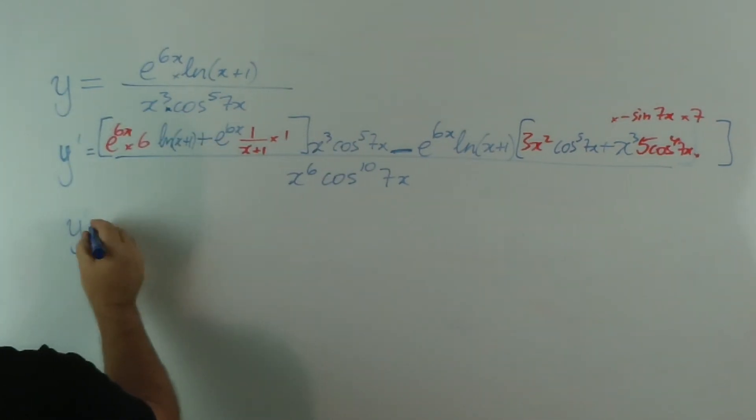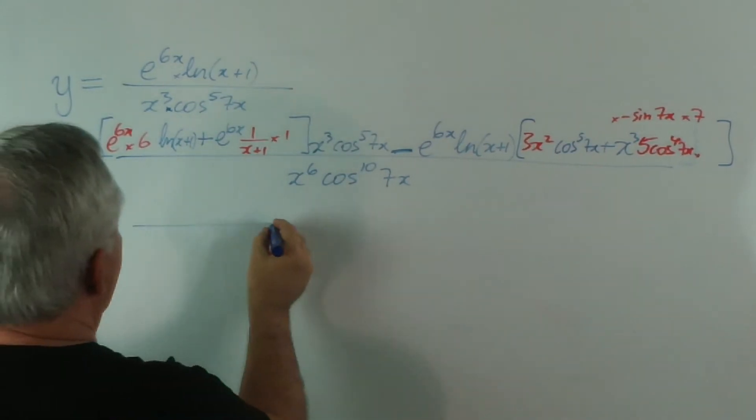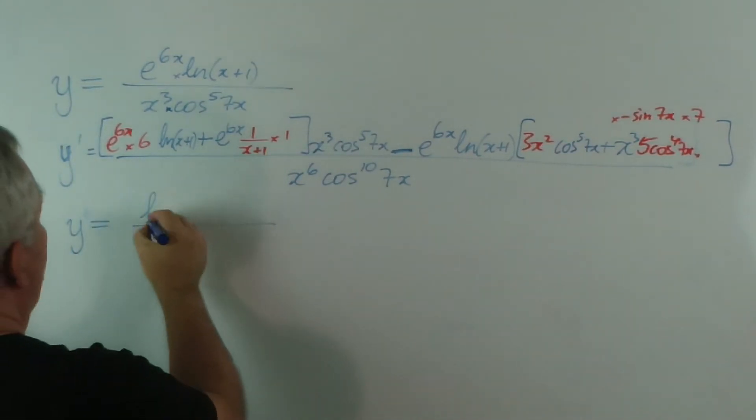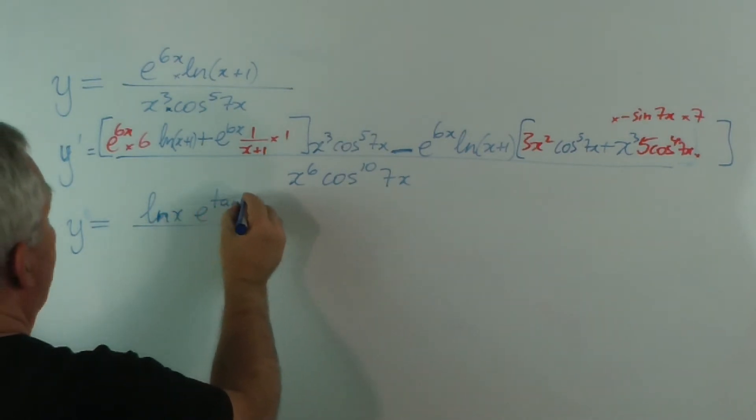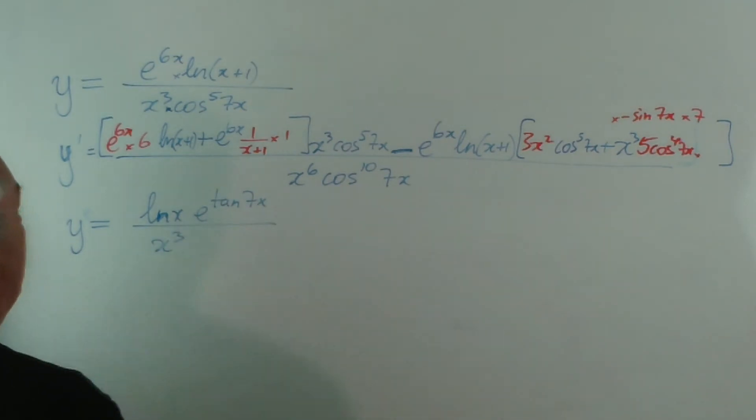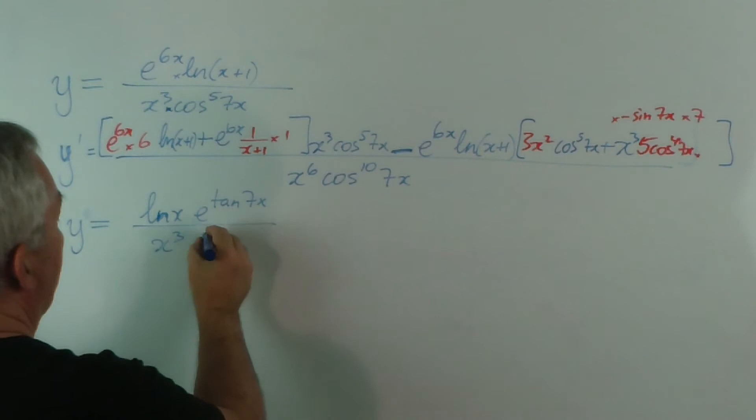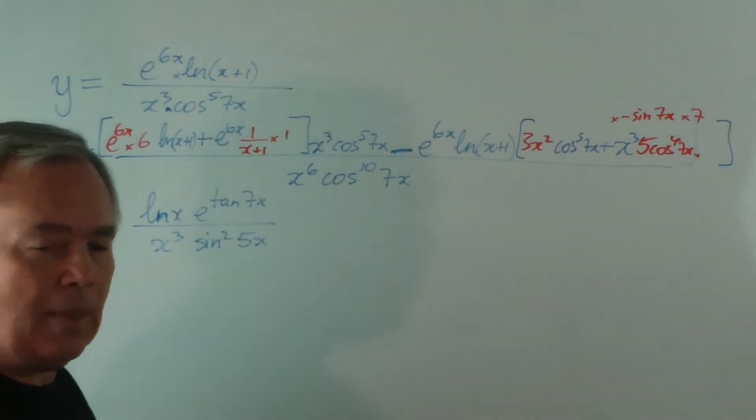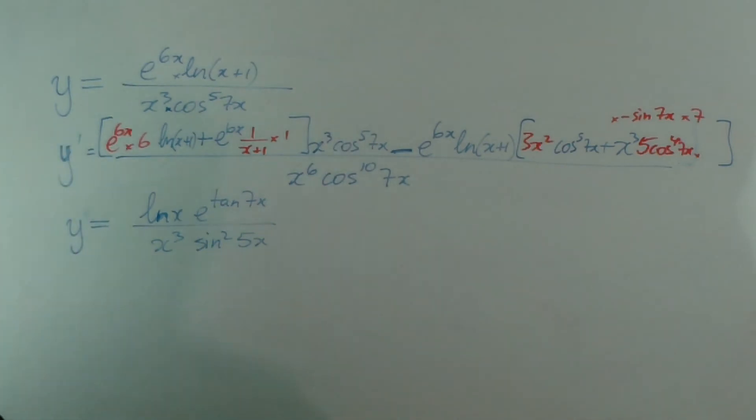Let's do another quotient. log(x)·e^(tan7x), for example, and on the bottom we might put x³sin²(5x). So, how do we find the derivative of this compound function?